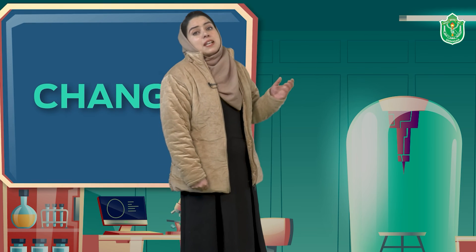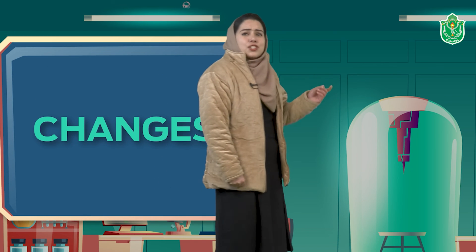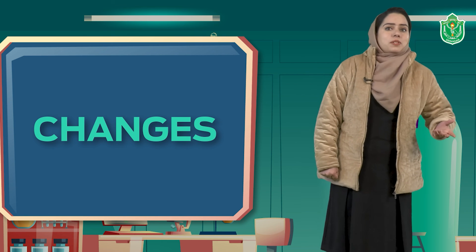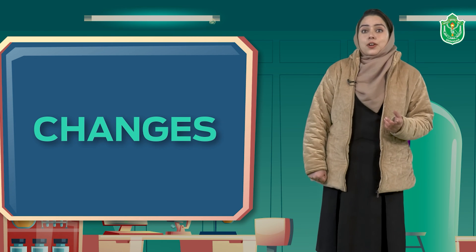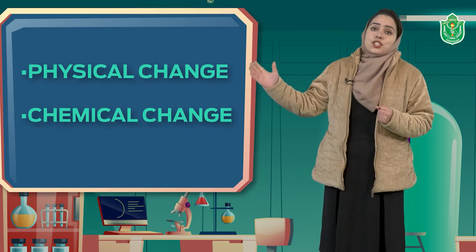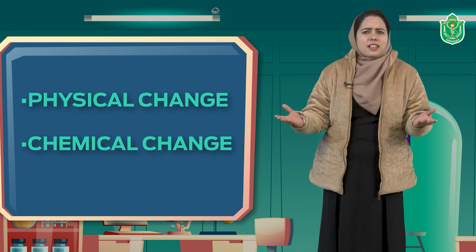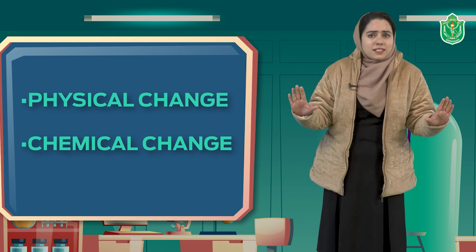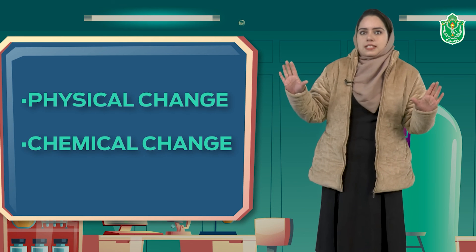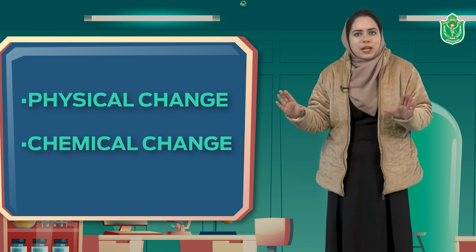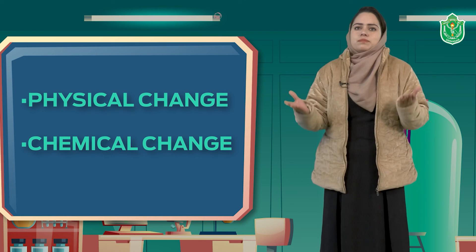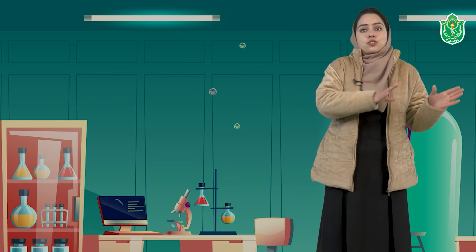Moving forward, at the end we discussed about changes. Change is becoming something different — it can be change in size, shape, color, or a new substance is formed. Changes are of two types: physical change, which is generally temporary and can be reversed with no new substance formed; and chemical change, when new substances are formed. For example, burning of paper or wood — ash is formed and you cannot convert ash back to the wooden log. That's all about this chapter. I hope you have enjoyed it. Thank you.